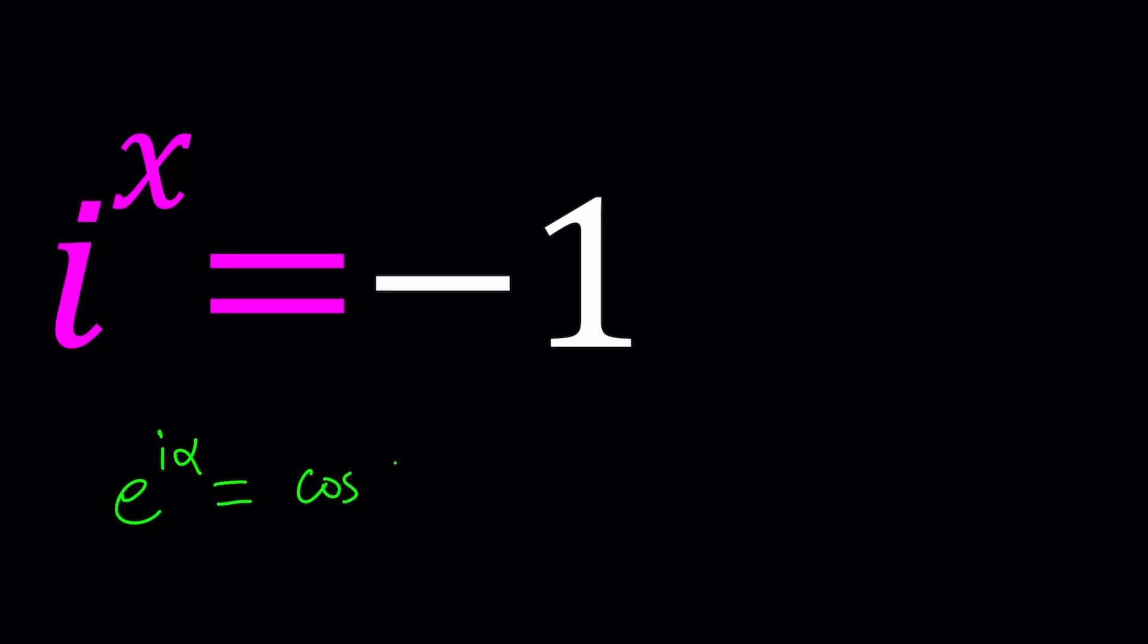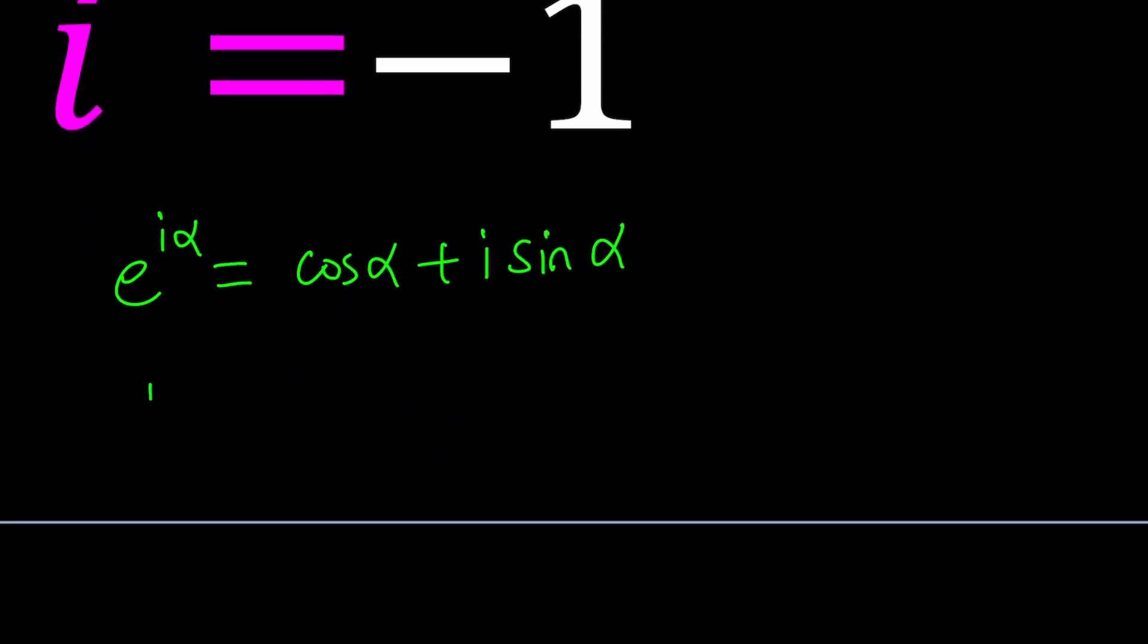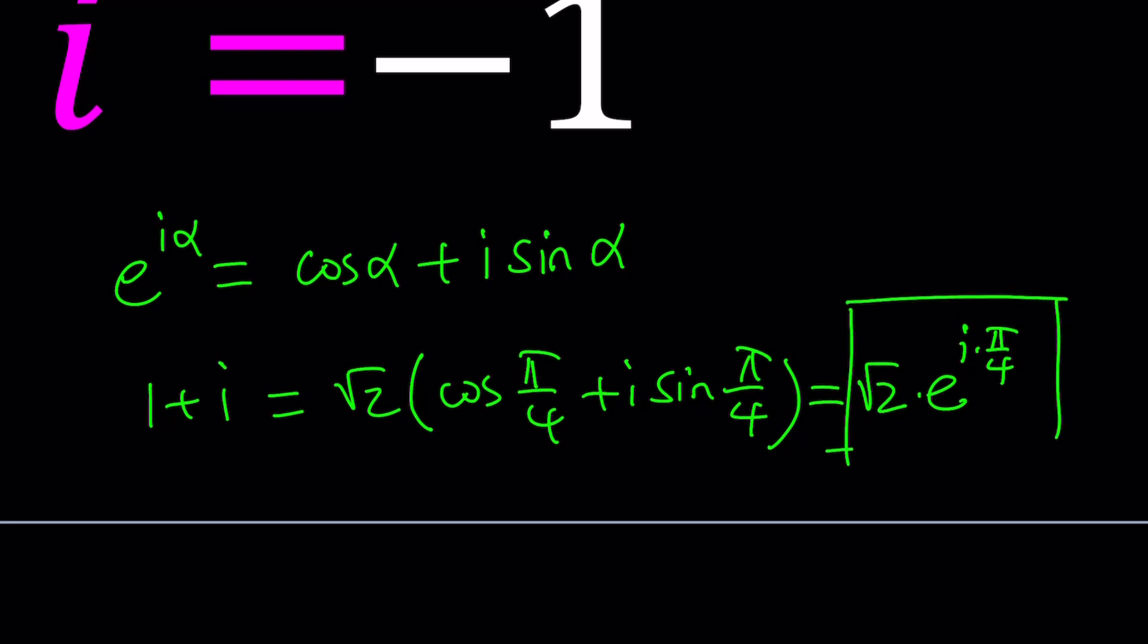we can basically write this as cosine alpha plus i sine alpha. So when you have a complex number in trigonometric form such as 1 plus i, this can be written as square root of 2 times cosine pi over 4 plus i sine pi over 4. You can write it in a more compact form as root 2 multiplied by e to the power i times pi over 4. This is really nice because it's much more compact.